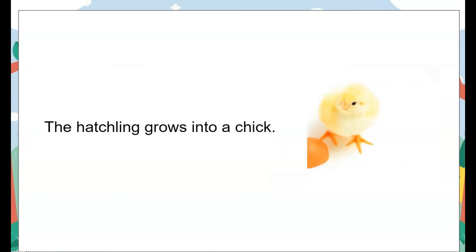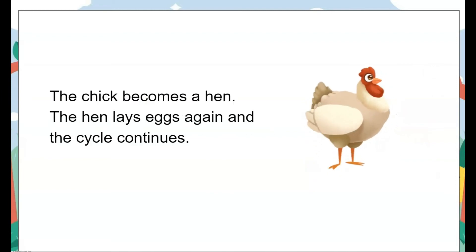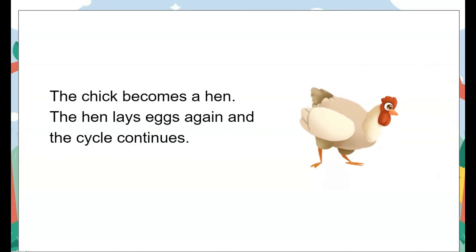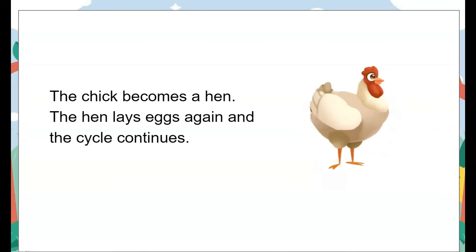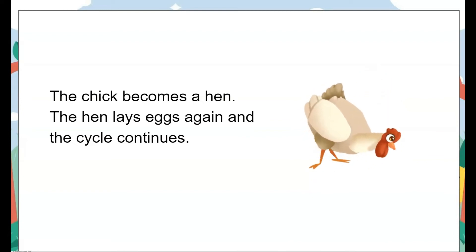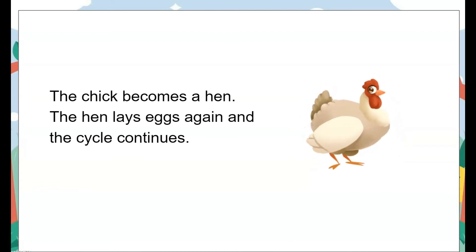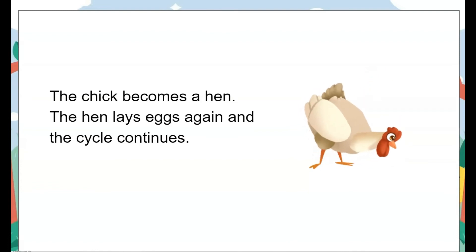The hatchling grows into a fluffy chick. The chick then grows into a hen. The hen lays eggs again and the cycle goes on and on. That is why it is called the life cycle.